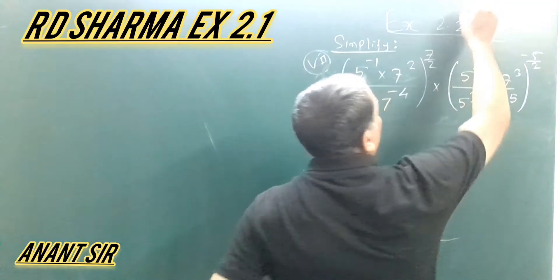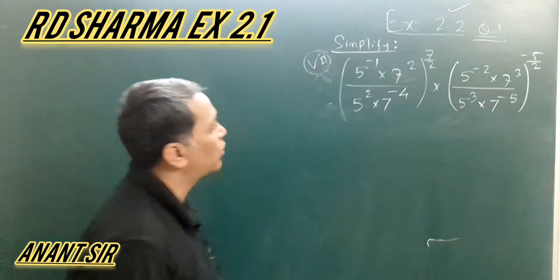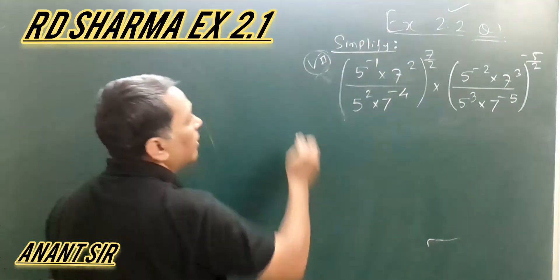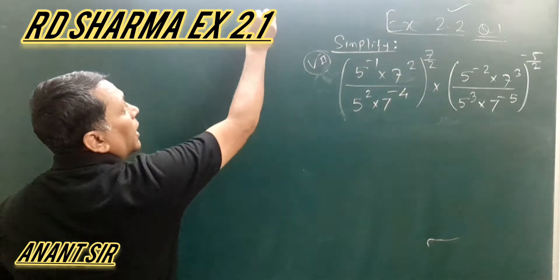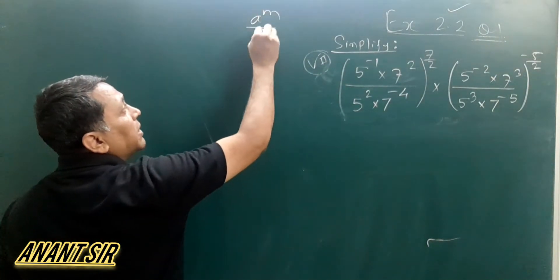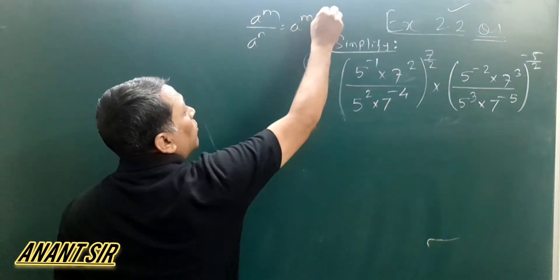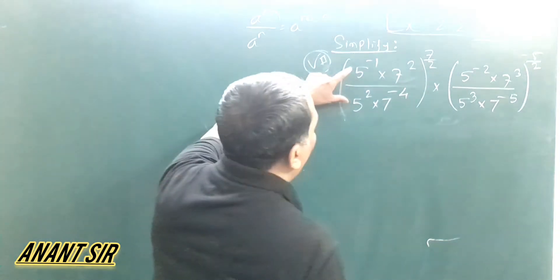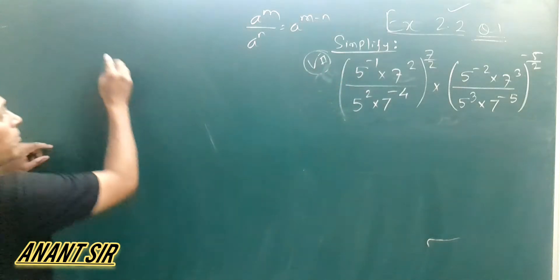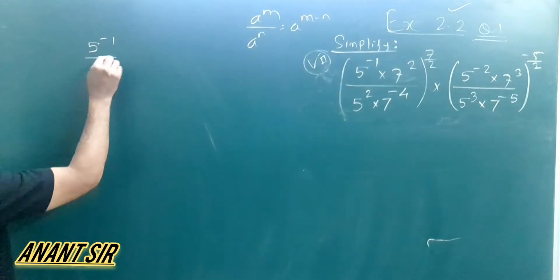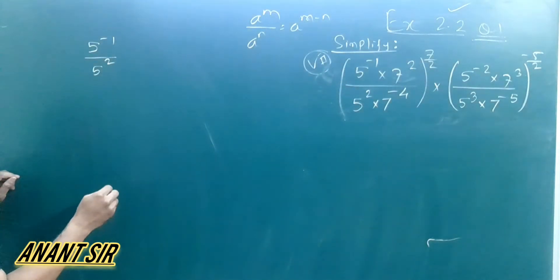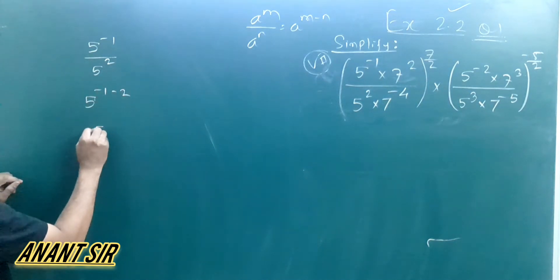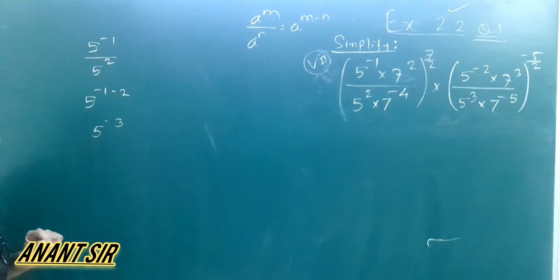To point to exercise the cross question, question number 7, simplify it. First, we use this formula: if A divided by B, C means B is divided, then we minus the power. So if A over B to the C means B divided, and power minus the power. So it means B is minus one, minus 2, 5 raised to minus 3.